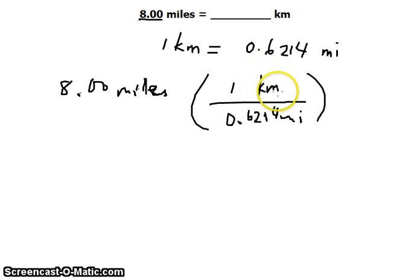In the numerator we write the desired unit, that is one kilometer. Now we can cancel the unit miles. If you operate using a calculator, 8.00 divided by 0.6214, you will get an answer like 12.88 something, 12.874 actually.